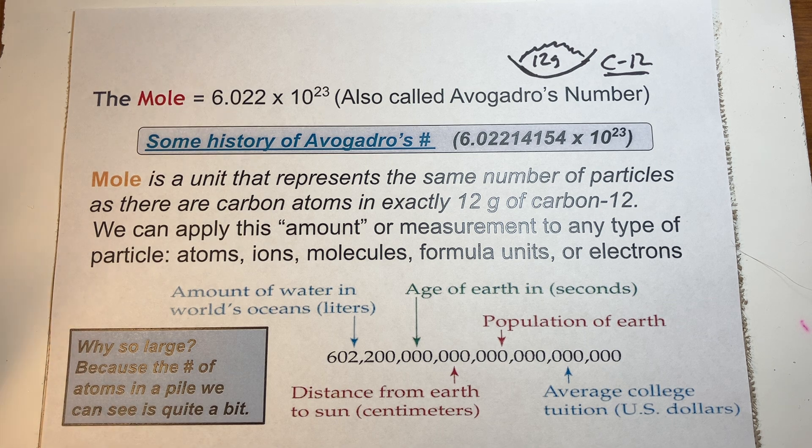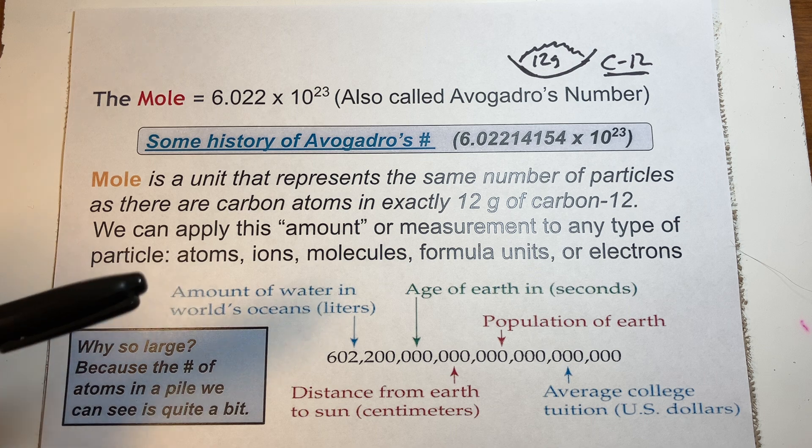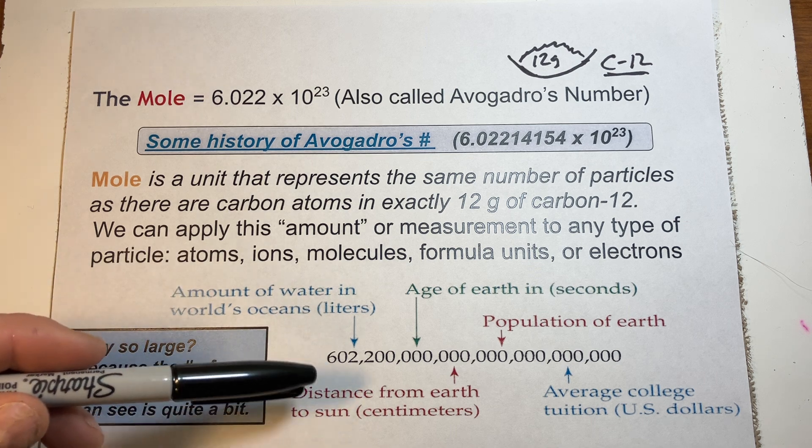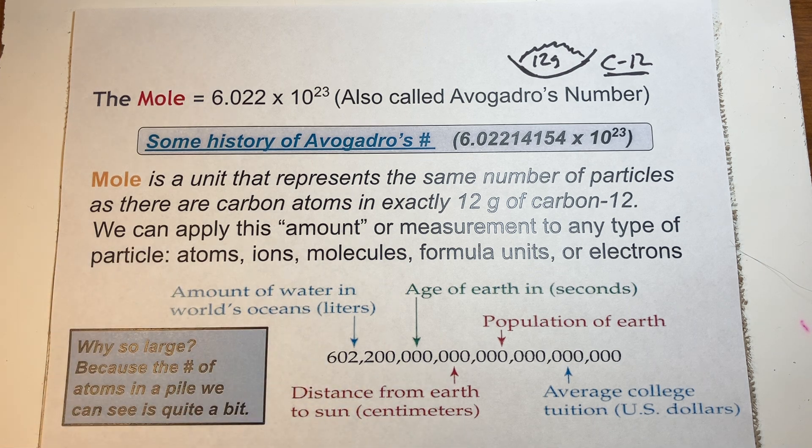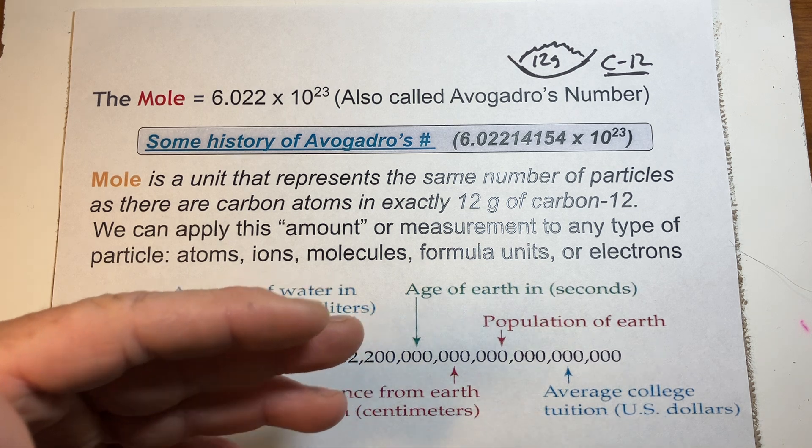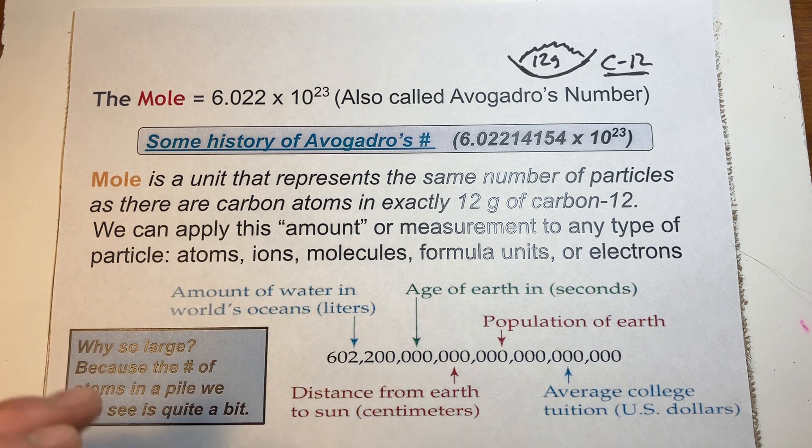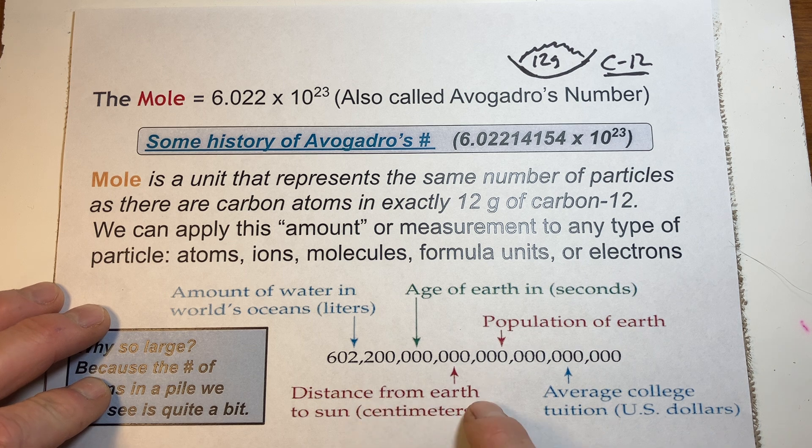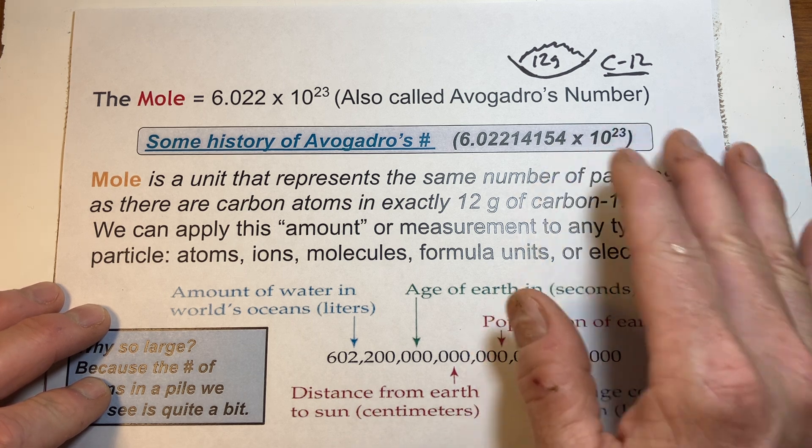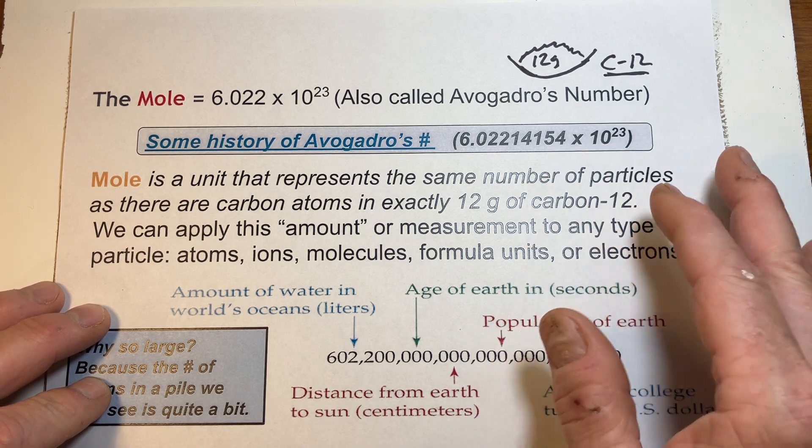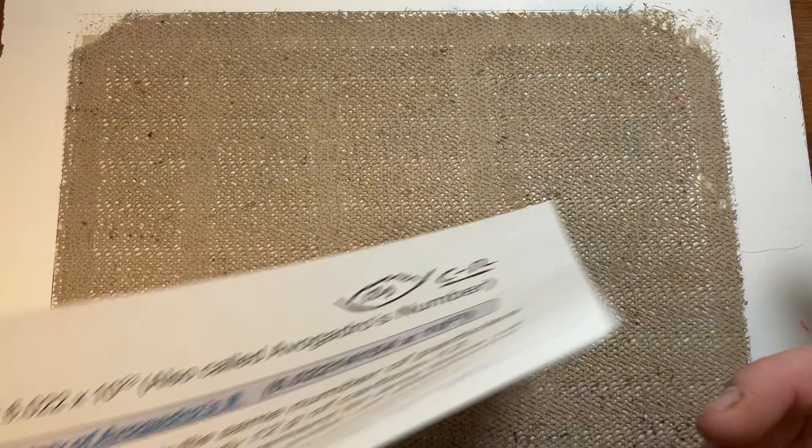Now that we kind of define what a mole is, it's defined as that number of carbon twelve atoms in exactly twelve grams, we can use that as a unit, a sort of conversion factor. It's very, very large. It's larger than anything we really kind of run up against in the world as far as the age of the earth, number of people on the earth, the liters of water in the ocean. They all fall short of this very large number. 6.02 times 10 to the 23rd.